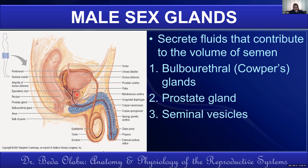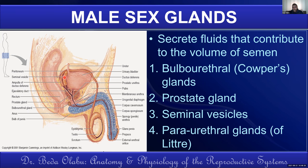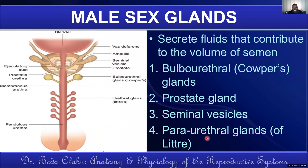The seminal vesicles are paired structures located behind the urinary bladder, between the bladder and the rectum. They produce fructose that nourishes sperms with energy. The prostate produces alkaline fluid that neutralizes the acidity of the vagina. The paraurethral glands, also called the glands of Littré, open into the penile urethra, contributing to semen volume and lubricating the urethra during coitus.